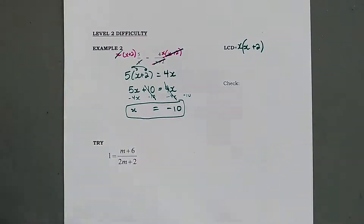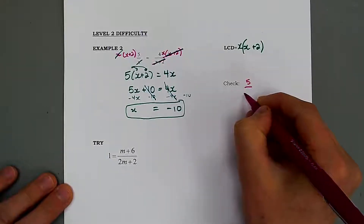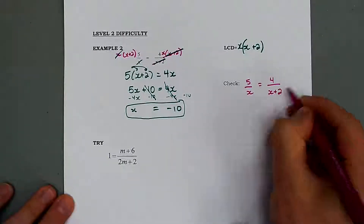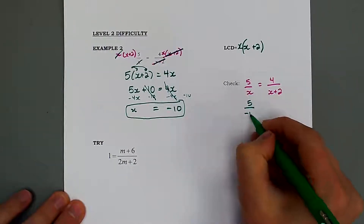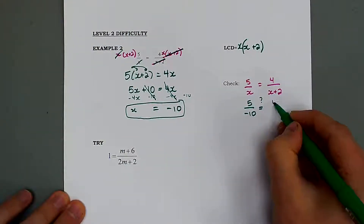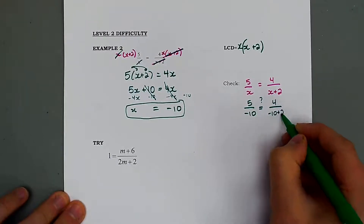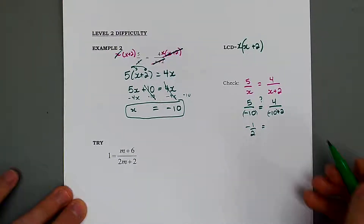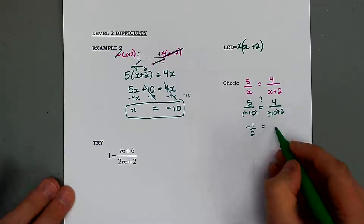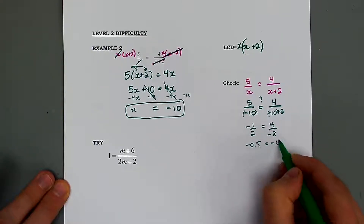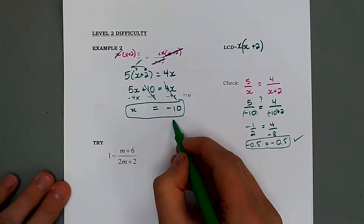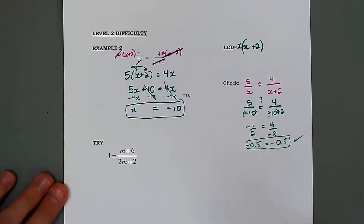If you're unsure whether it worked out, you can always check by plugging your answer back into the original question. Is 5 divided by negative 10 equal to 4 divided by negative 10 plus 2? Well, 5 divided by negative 10 is negative 0.5, and 4 divided by negative 8 is also negative 0.5 — so yes, that answer works.